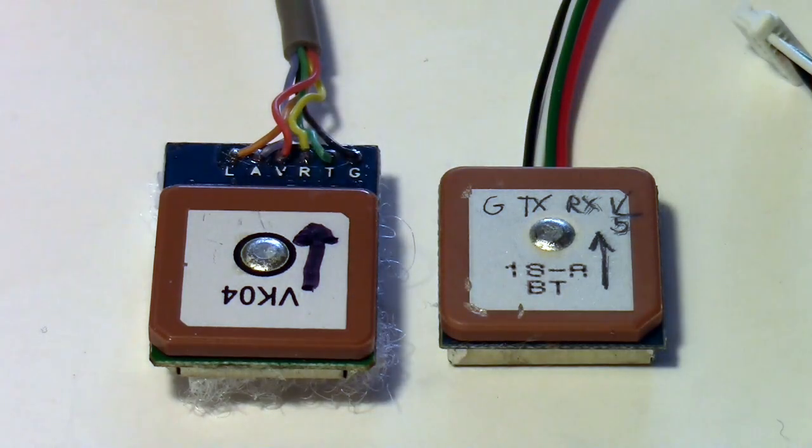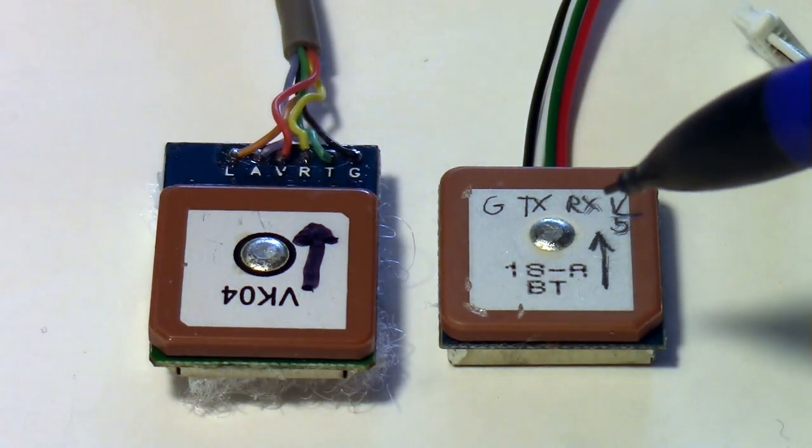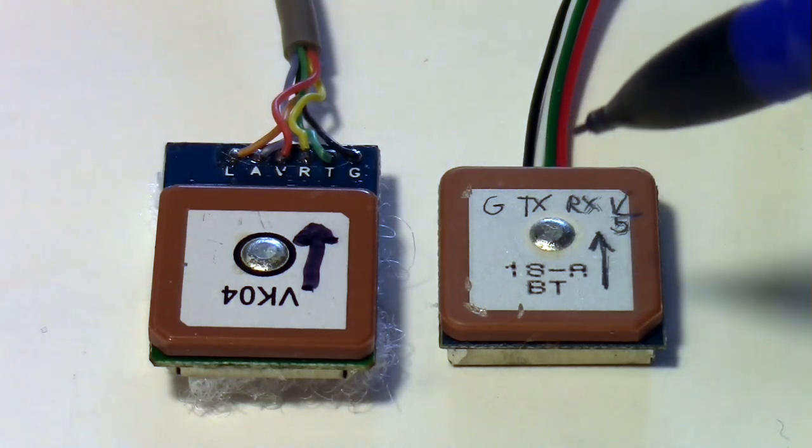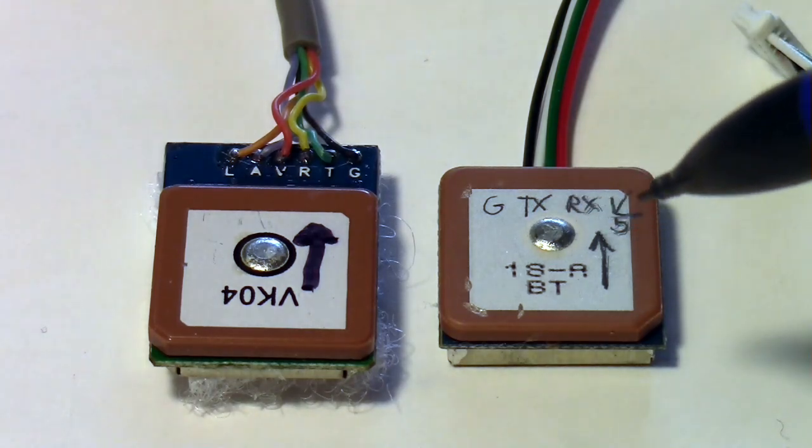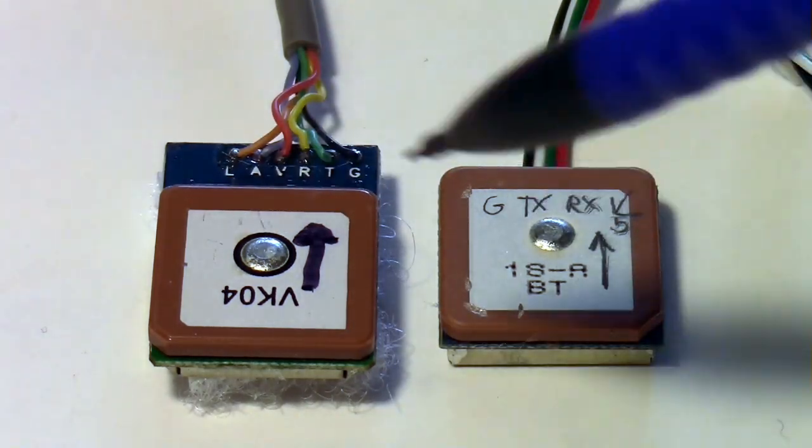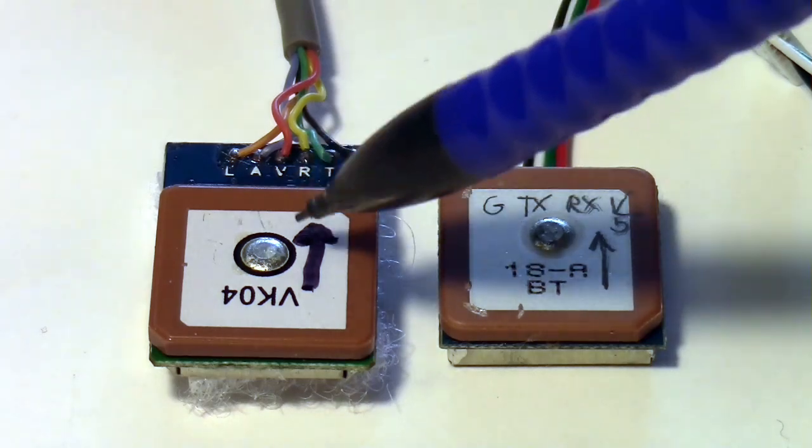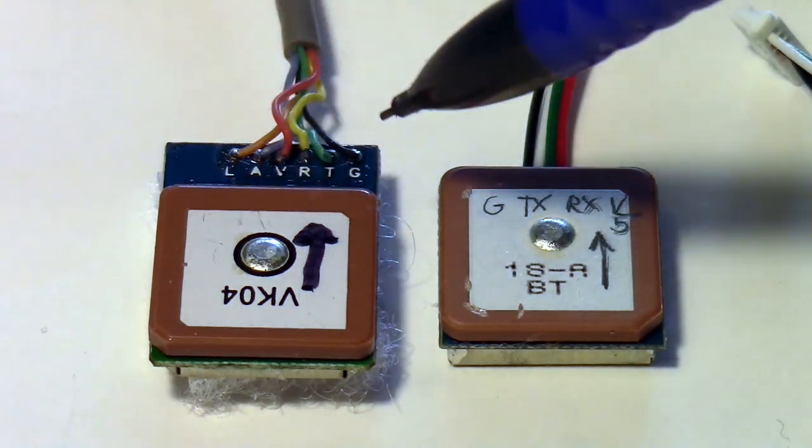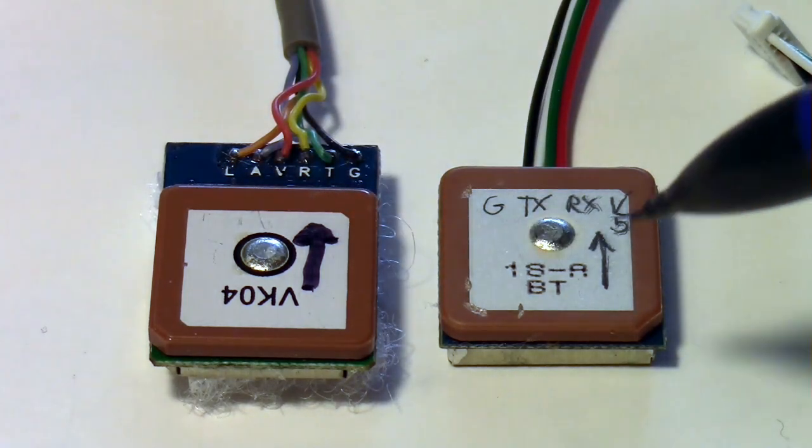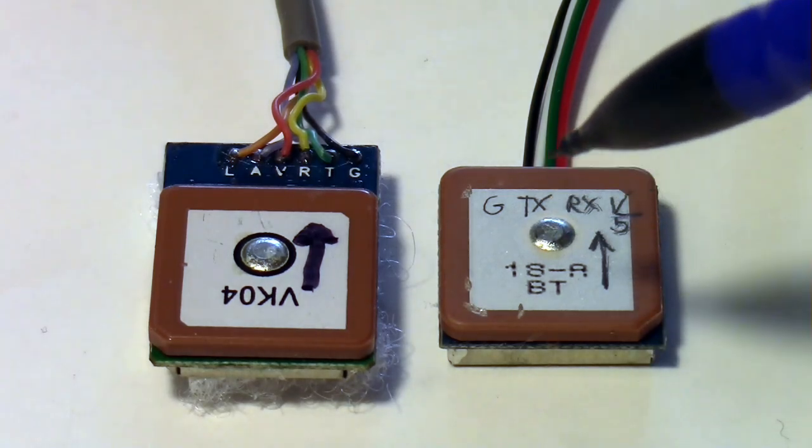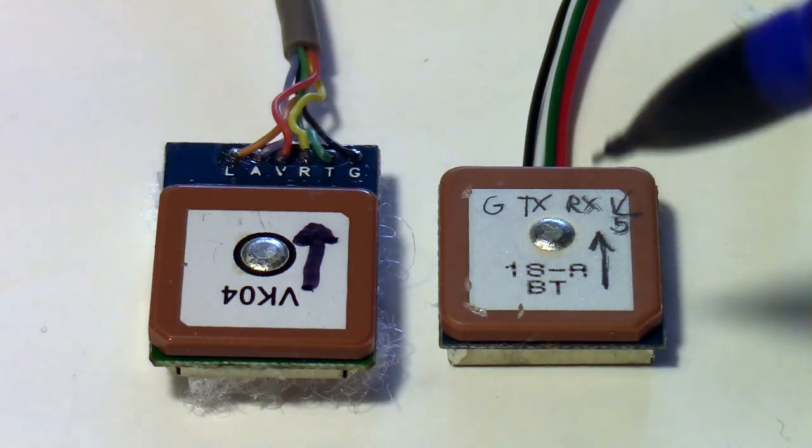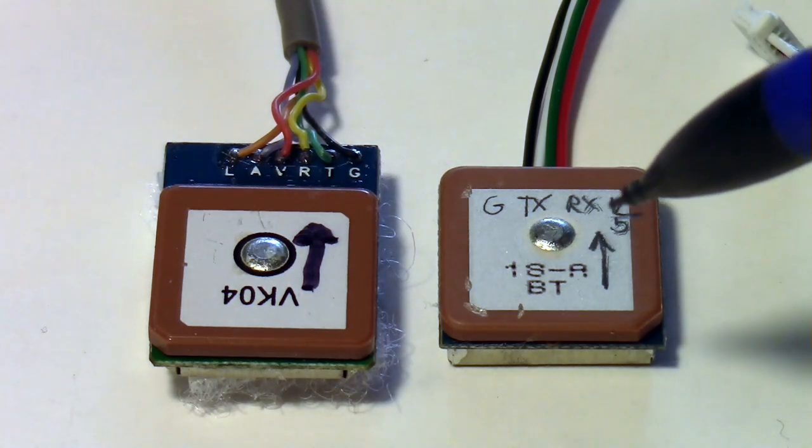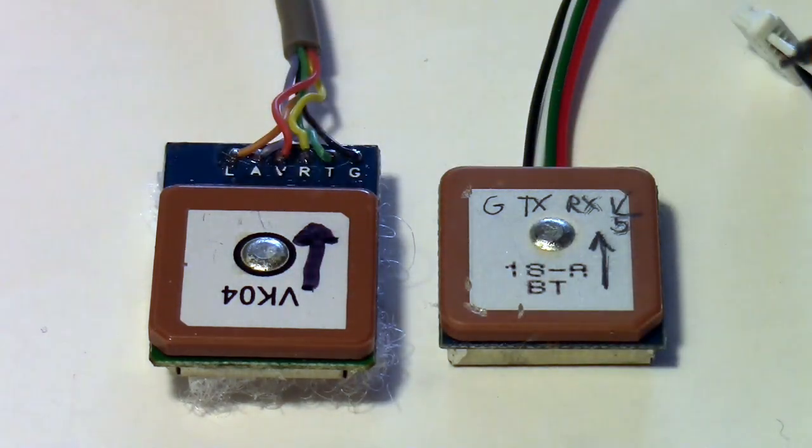And then over here from Ready to Fly Quads, I have the mini M8N version with GLONOS support. So they're a little different in the fact that this one over here from Banggood has a magnetometer and has six wires and this one over here does not have a magnetometer, but it does have GLONOS satellites. So they've got different features, both have their advantages.